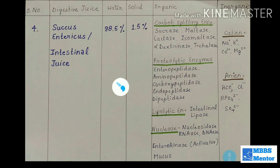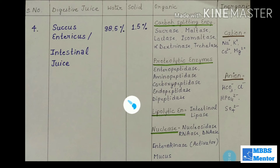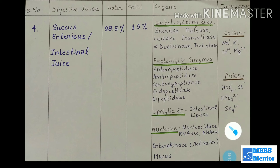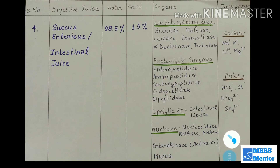The proteolytic enzymes of intestinal juice include enteropeptidase, aminopeptidase, carboxypeptidase, endopeptidase, and dipeptidase. The lipolytic enzyme includes intestinal lipase. Nucleases include nucleosidase, RNase, and DNase. There is also an important activator enzyme called enterokinase, and mucus is also present.